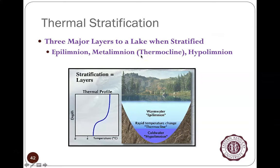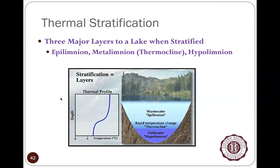Another name for the metalimnion zone is the thermocline. 'Thermo' means temperature and 'cline' means change — a clinometer in geology measures slope or change, so thermocline is the temperature-change zone. The epilimnion has fairly stable temperatures at the top, the hypolimnion has fairly steady, colder temperatures at the bottom, and the metalimnion or thermocline is the transition layer in between.